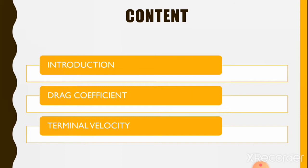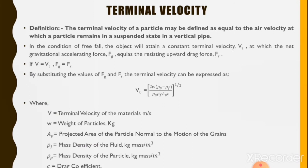Terminal velocity is one of the aerodynamic properties of agricultural produce. The terminal velocity of a particle may be defined as equal to the air velocity at which a particle remains in a suspended state in a vertical pipe. It means the particle does not move in an upward direction or does not go down in a downward direction.